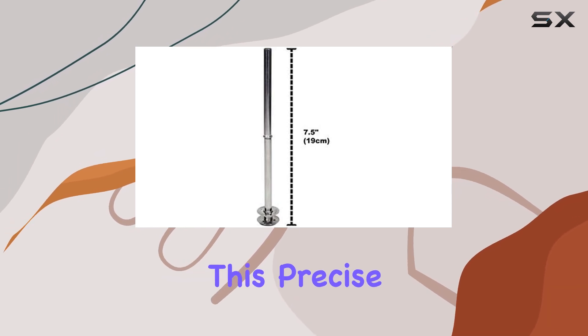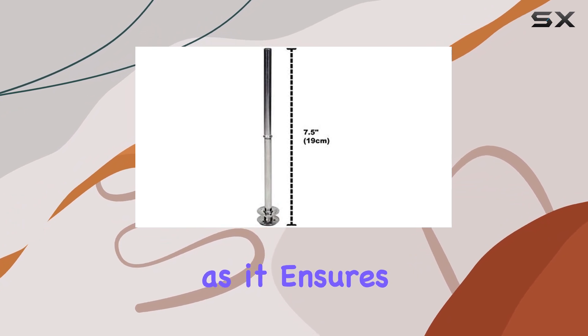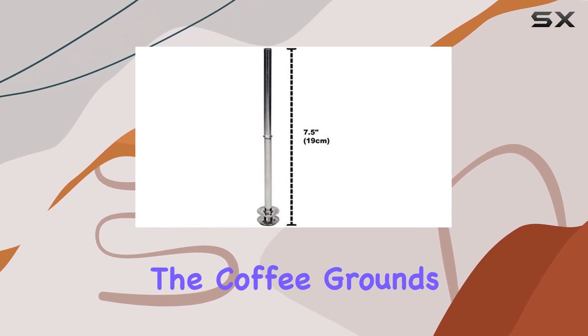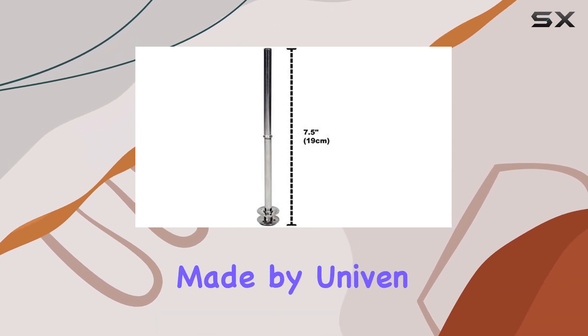This process is fundamental to extracting the full flavor and aroma from your coffee. Made by Univine, a brand known for its quality aftermarket parts, the pump tube is presented in silver, blending in with the classic design of Farberware percolators.